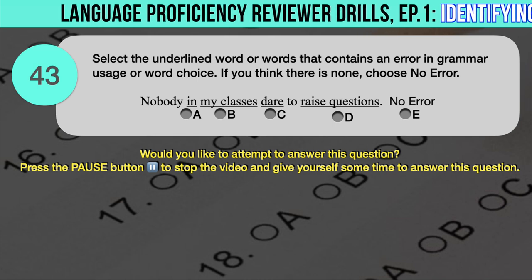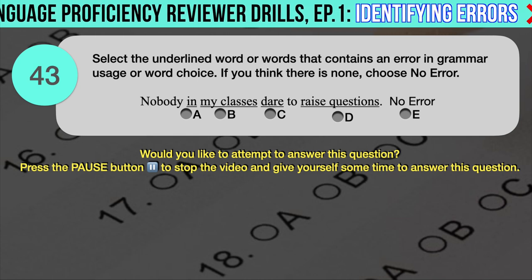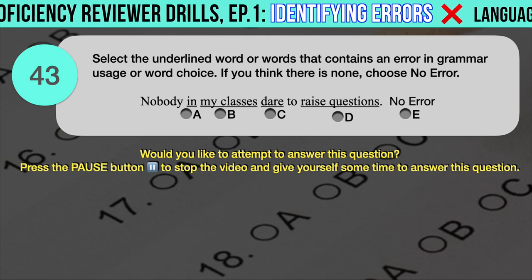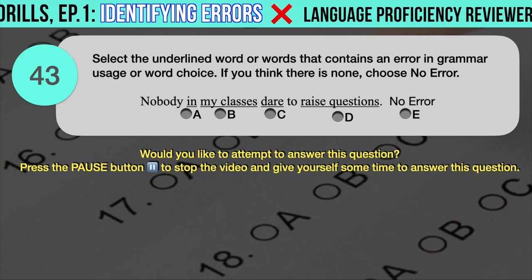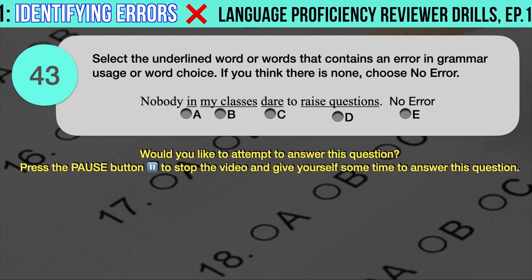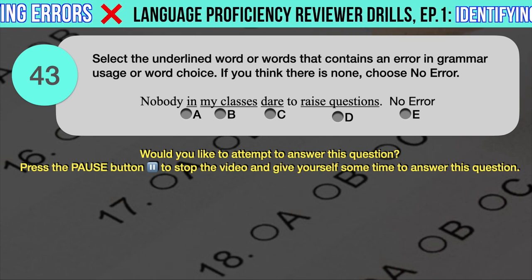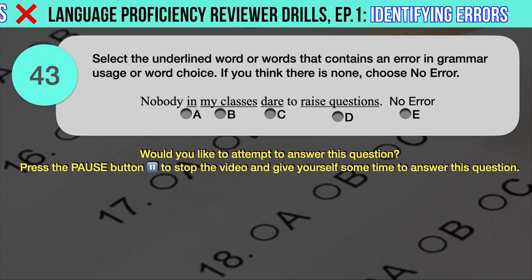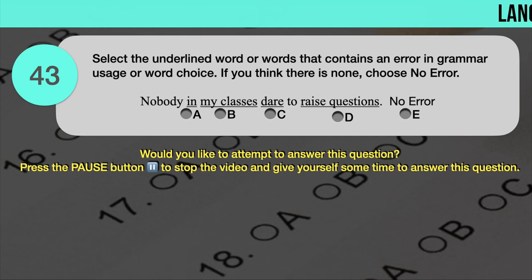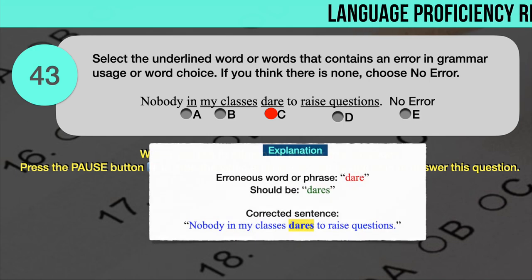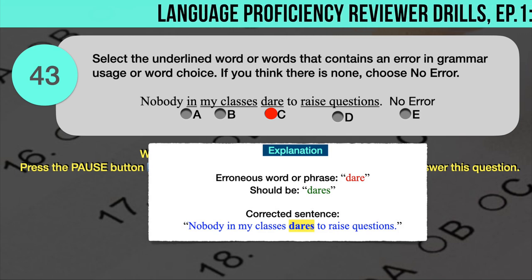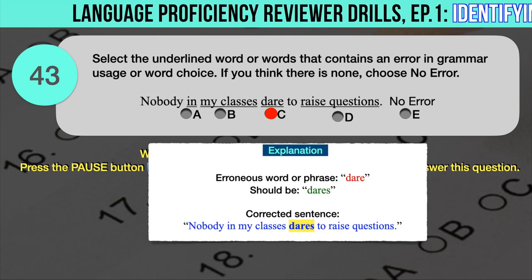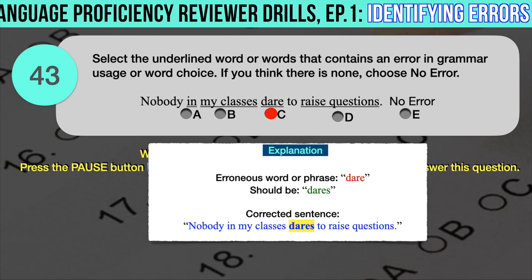Drill question number 43. 'Nobody in my classes dare to raise questions.' The underlined words are: A. In, B. My classes, C. Dare, D. Raise questions. The correct answer is C. 'Dare' should have been 'dares' to conform with the singular subject 'nobody.' Correct sentence: Nobody in my classes dares to raise questions.